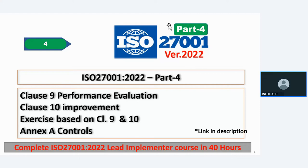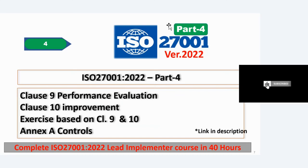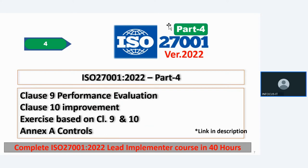Then, once you are done with video number 3, you move to the last video — video number 4, Part 4. Under video number 4, you will cover clause number 9, that is performance evaluation, clause number 10, improvement, and exercises based on clauses 9 and 10. In this video you will also be learning about Annex A controls. In the new version there are a total of 4 control categories, and within those 4 categories there are 93 controls. All the policies and procedures required for Annex A would be covered as well.